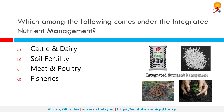Which among the following comes under Integrated Nutrient Management? The correct answer is soil fertility. Integrated Nutrient Management refers to the maintenance of soil fertility and plant nutrient supply at an optimum level for sustaining the desired productivity, through optimization of benefits from all possible sources of organic, inorganic, and biological components in an integrated manner.